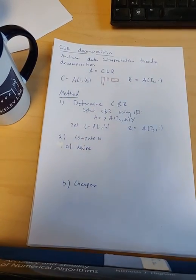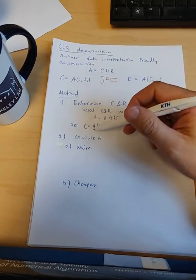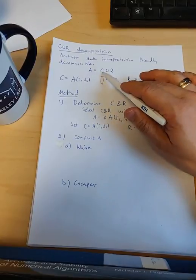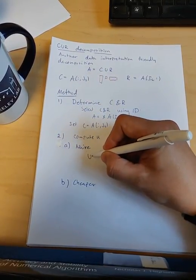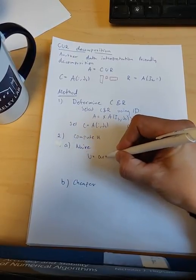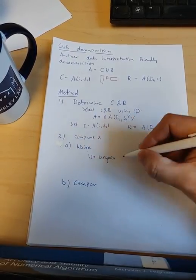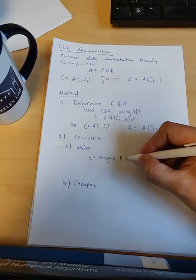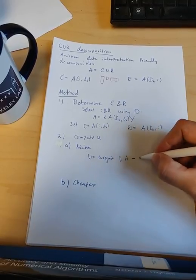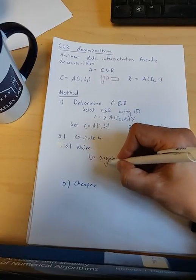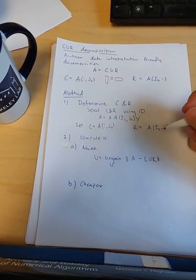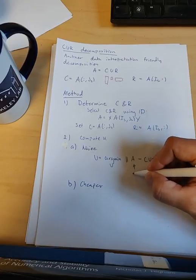Either you compute by just looking at, now we know C and R, U is the only unknown. So we want this equality to hold. Let's just define U as the minimizer of the difference between the left-hand side and the right-hand side.